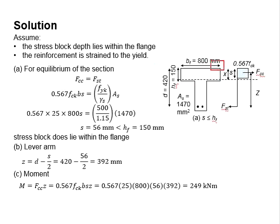Next, you need to calculate the lever arm. The lever arm is determined by subtracting d with half of the height of the stress plot, as given in this equation. It is later found to be 392 mm.